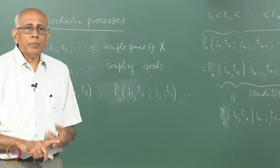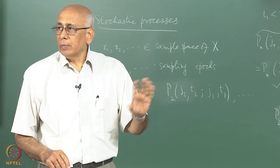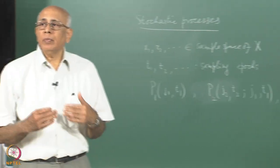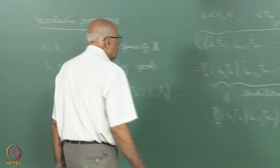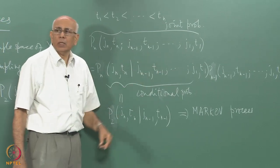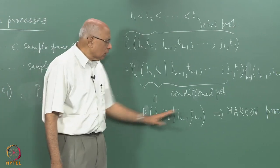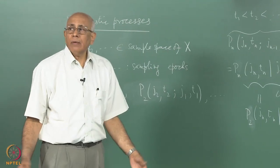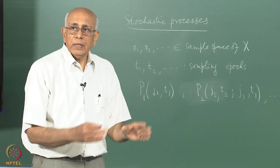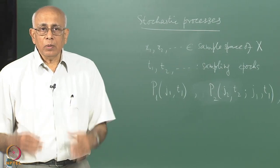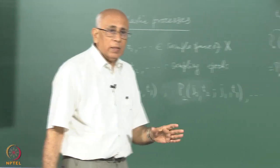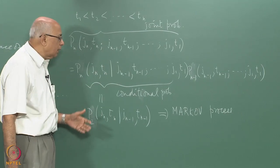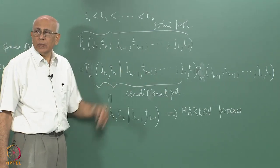To repeat: a Markov process says nothing about the form of the probability distributions — it doesn't say whether it is Gaussian or whatever. It says something about the level of memory in the process. Sometimes there are cases where you would like the process to depend on the preceding two instances — that is called a two-step Markov process. But our straightforward definition is this. It does not always have to happen, but it turns out that if you model physical systems appropriately with the right number of variables, almost always you end up with a Markov process.